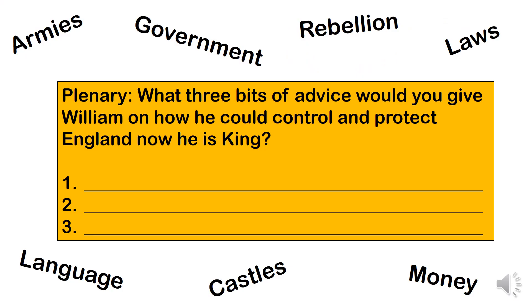Let's get on to our final activity today, our plenary. You're an advisor to William and he's just been made King of England. What three bits of advice would you give William on how he could control and protect England now he is king? To help you, there are some key words around the edge: armies, government, rebellion, laws, language, castles, and money. You don't have to use all of them, but try to use at least three. Write down three pieces of advice. Pause the video here to write them down.